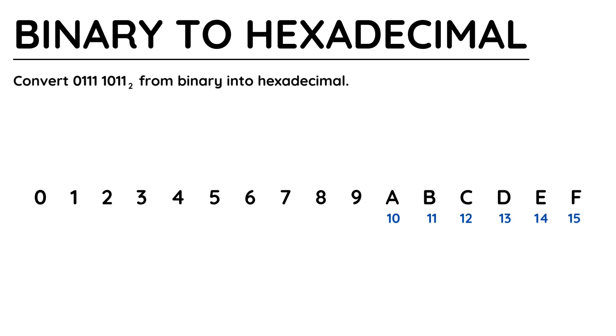Hexadecimal uses single digit numbers, so 10 is converted into A, 11 becomes B, up to 15 which is turned into F. It's a sensible idea to write the A to F equivalents somewhere on your page to remind you.